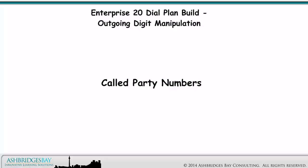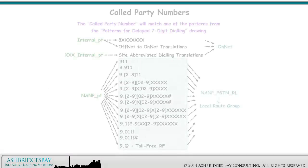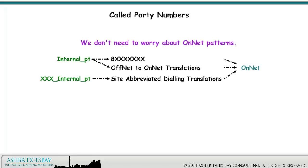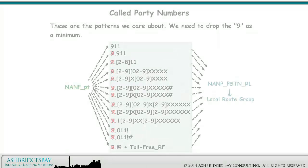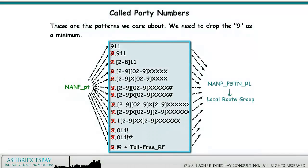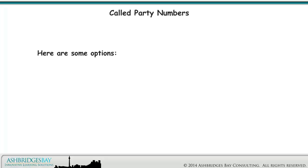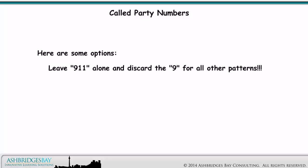Let's look at called party numbers. We need the right phone to ring. The called party number will match one of the patterns from the Patterns for Delayed 7-Digit Dialing drawing. We don't need to worry about on-net patterns. These are the patterns we care about. We need to drop the 9 as a minimum. Here are some options: leave 911 alone and discard the 9 for all other patterns.